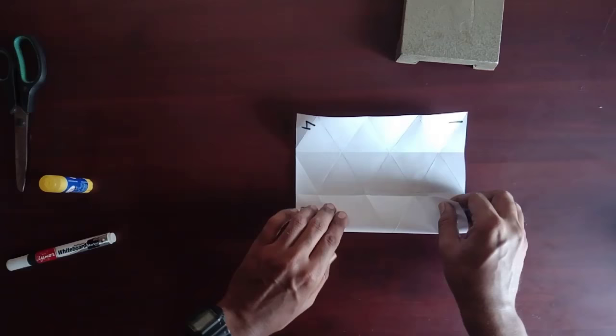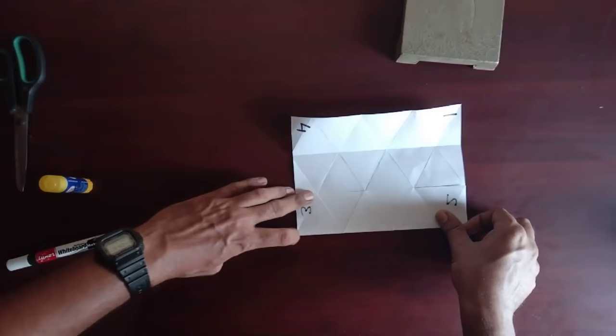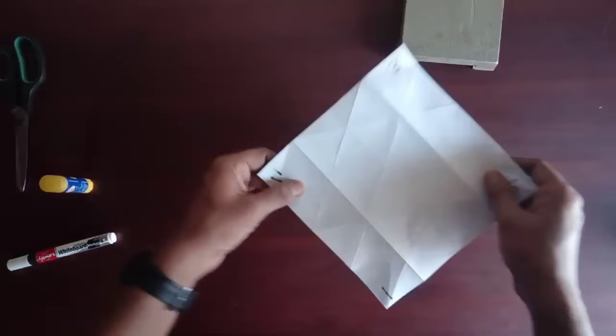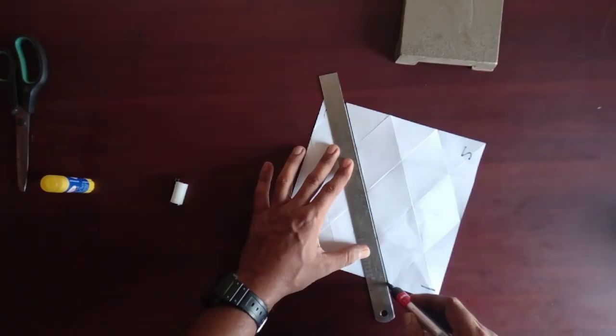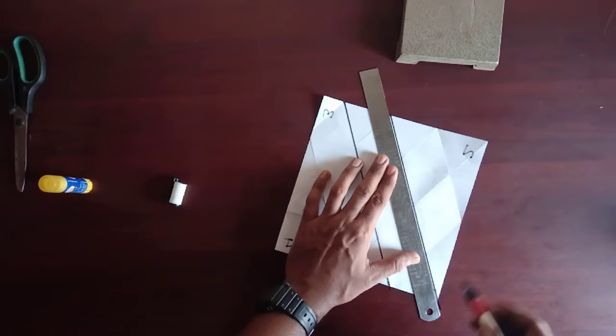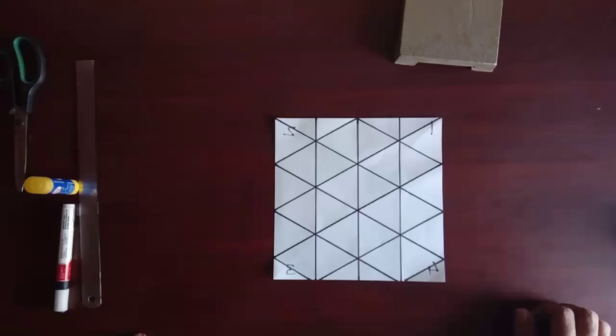Do the same for upper side also. In this way you will see that the sheet is divided into many equilateral triangles. Now highlight these folds using sketch pen or marker. In this way your sheet will look like this.